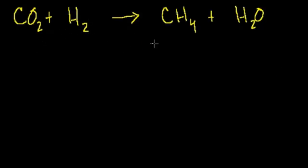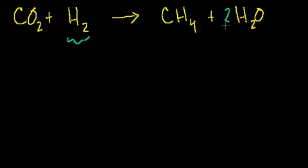Carbon dioxide plus hydrogen gas yields methane plus water. Let's deal with the carbons first: I have 1 carbon here and 1 carbon there — the carbons look happy. Let's look at oxygen: I have 2 oxygens here and 1 oxygen there, so I want 2 oxygens here, let me stick a 2 there. Finally the hydrogens — I have 2 here, and I have 4 plus 4 on the right side, so I need 8 hydrogens on the left-hand side, so I just put a 4 there. And we're all done balancing.